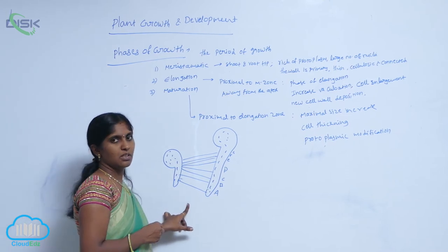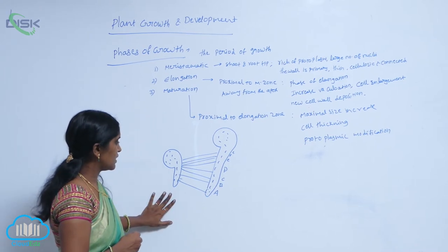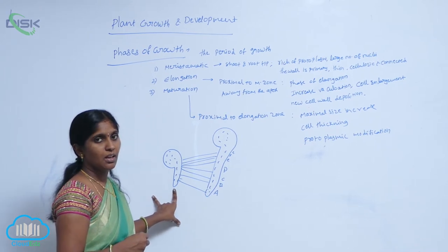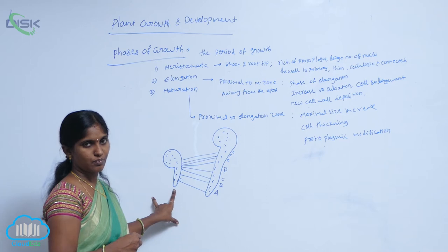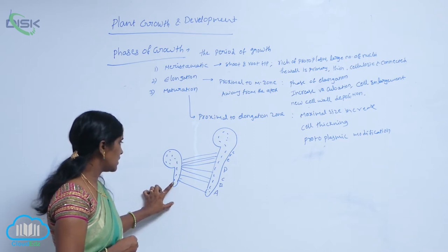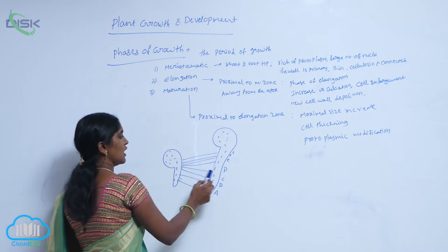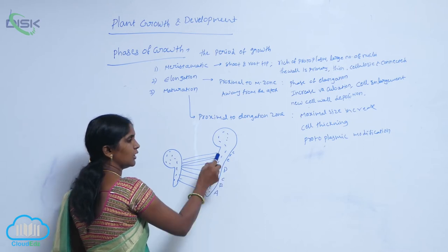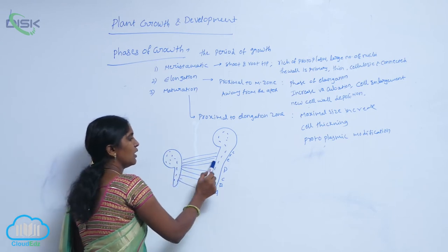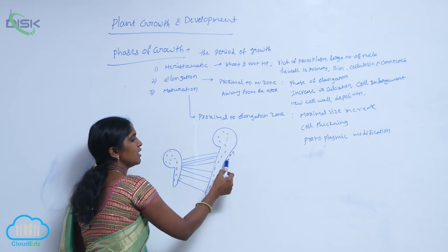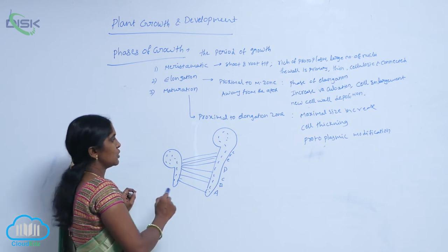You observe in this plant part, here different zones are present. First, the apex zone. The apex zone is full of meristematic tissue. Proximal to the meristematic zone, there is an elongation zone, where elongation is carried out. And the next zone is the maturation zone, where no elongation occurs but the cells are maturing. So we find three zones in this diagram.